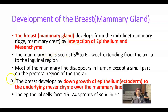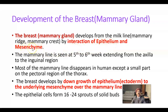The breast or mammary gland develops from the milk line, also called mammary ridge or mammary crest, by interaction of epithelium and mesenchyme. Mesenchyme is the embryonic connective tissue; the epithelium here is the surface epithelium, and this mesenchyme is from the somatopleuric mesoderm. The mammary line is seen at the fifth to sixth week of intrauterine life, extending from the axilla to the inguinal region.